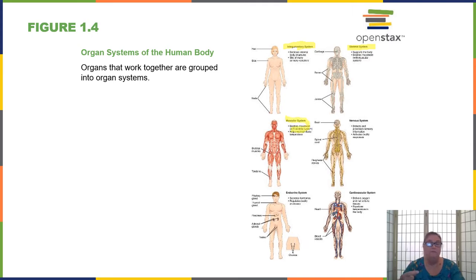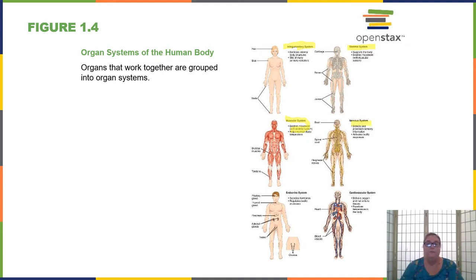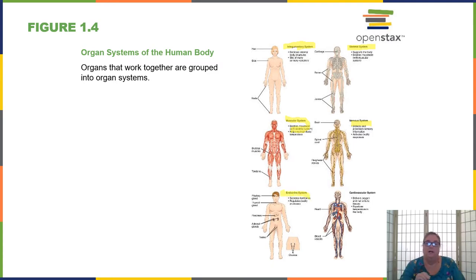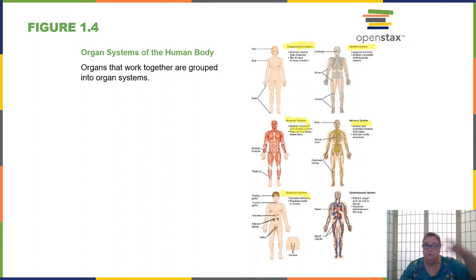The muscular system allows for movement, moves the bones, and also generates heat. If we're a little cold, we might shiver or move around to generate warmth. The nervous system controls the body, receives information from the outside environment, interprets what that means, and receives information from the inside as well. The endocrine system also controls the body and other body systems, but not as quickly as the nervous system. The endocrine system controls thirst, hunger, sexual drive, growth, digestion, and blood sugar levels. The nervous and endocrine systems do interact, and we'll talk more about that when we reach those chapters.